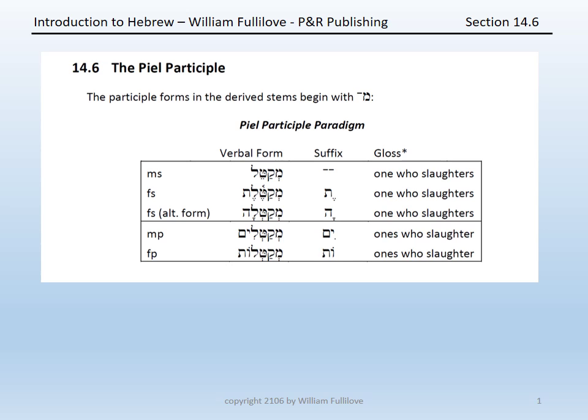In section 14.6, we address the PL participle. Unlike the CAL, the participle forms in the derived stems all begin with a prefixed MIM. So in the case of the PL participle, the forms are as follows.